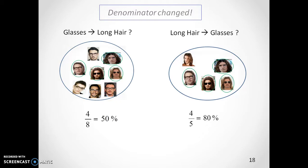Or, in other words, on the left, we calculate the conditional probability of long hair given glasses, and on the right, the conditional probability of wearing glasses given long hair.